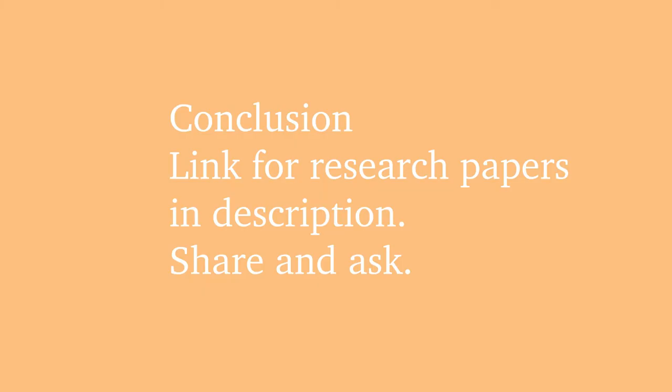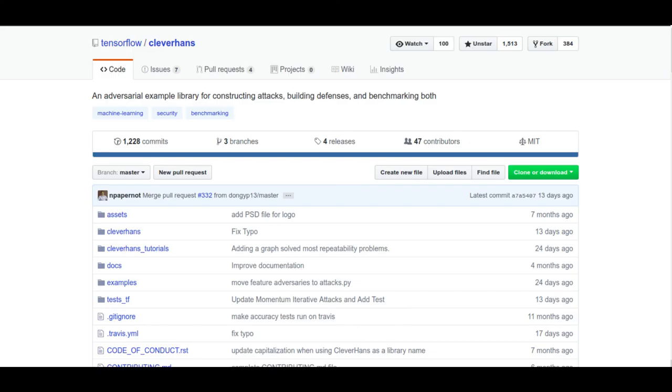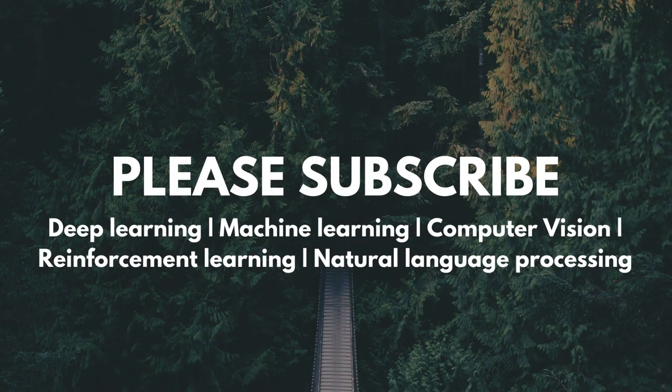In conclusion, adversarial examples show that many modern machine learning algorithms can be broken in surprising ways. They are not robust. And these failures of machine learning demonstrate that even simple algorithms can behave very differently from what their designers intend. To know more about it, and if you are especially interested in adversarial examples, I would highly recommend checking out CleverHans. Ian Goodfellow and other deep learning researchers are actively contributing. And if you like this video, consider subscribing to the channel.